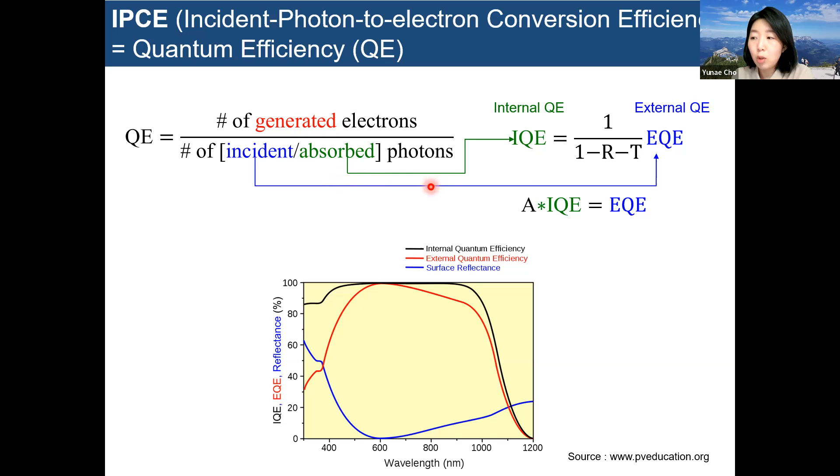There are two QE: the EQE and IQE. The EQE is the generated electron compared to the incident photon. However, internal QE is generated electron related to absorbed photon.